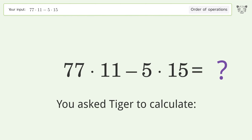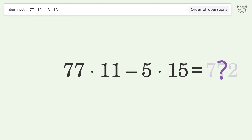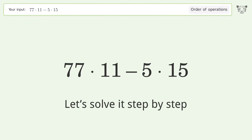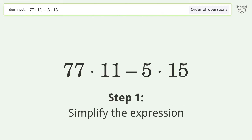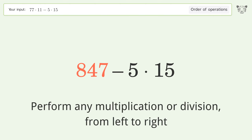You asked Tiger to calculate this. It deals with the order of operations — the final result is 772. Let's solve it step by step. Simplify the expression by performing any multiplication or division from left to right: 77 times 11 equals 847.